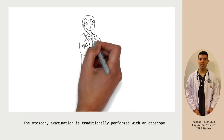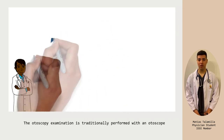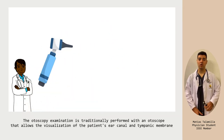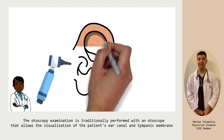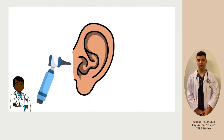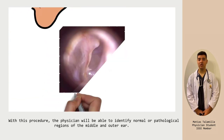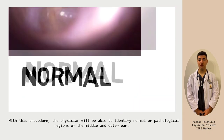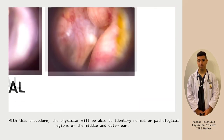The otoscopy examination is traditionally performed with an otoscope that allows the visualization of the patient's ear canal and the tympanic membrane. With this procedure, the physician will be able to identify the normal or pathological areas of the middle and outer ear.